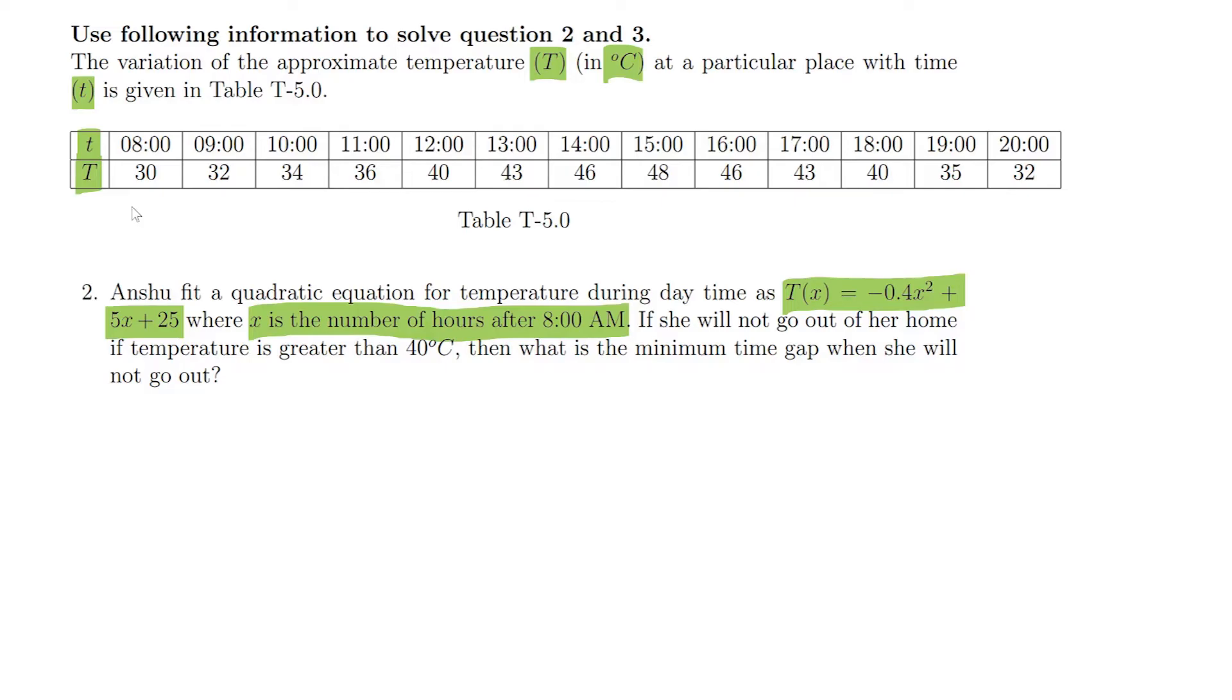If we wrote additionally here, x begins from 0. This is 0, this is 1, this is 2, 3, 4, 5, 6, 7, 8, 9, 10, 11, and 12. So we have x going from 0 to 12.